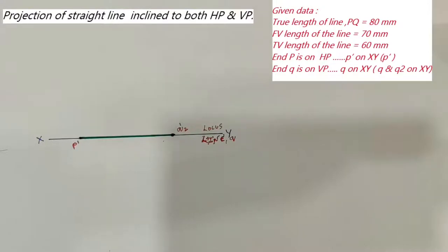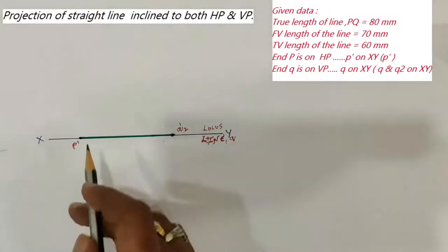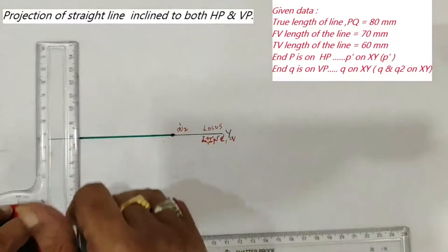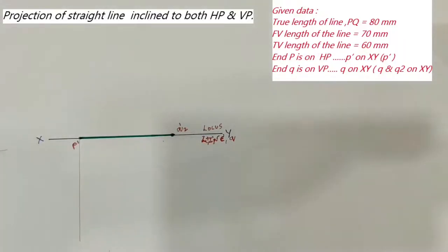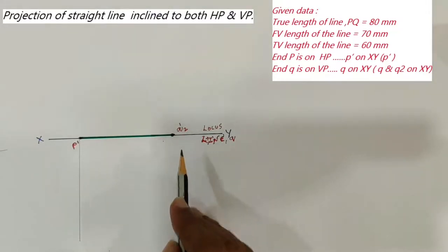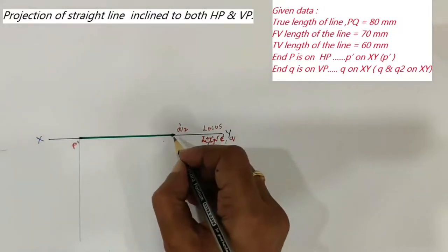From the basics of projection of straight lines inclined to both planes, we know that the front view as well as the top view of a point P fall on the same projector. So at P', draw a projector vertically downward. Since Q is on the VP, its top view image falls on the XY line, so this reference line becomes the locus line for Q. Therefore, Q2 point is going to coincide with Q2'.